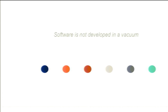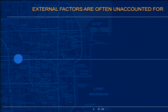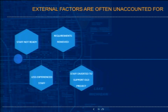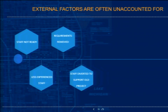Software is not developed in a vacuum. In estimation, we often think there's a clear path and nothing will get in the way — but there are many external factors we don't account for. Think about the beginning of a project: the contract finally gets signed, you're excited, and the staff isn't ready. Then someone changes their mind, and the developer you moved to the new project has to go back to fix a big bug on the old one.